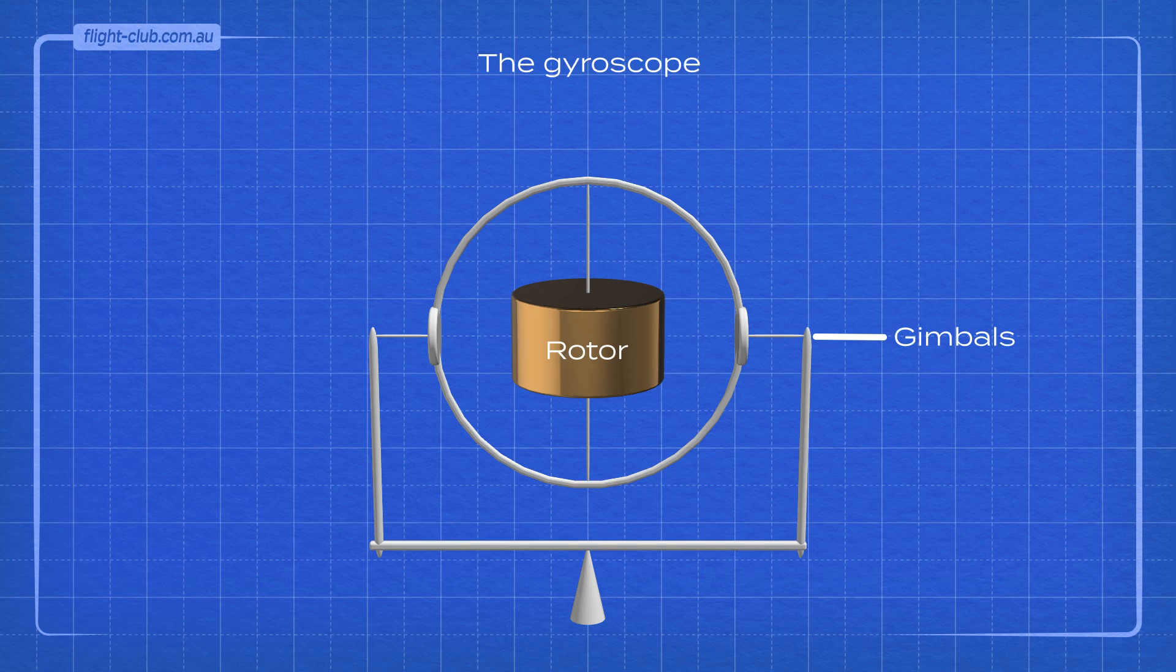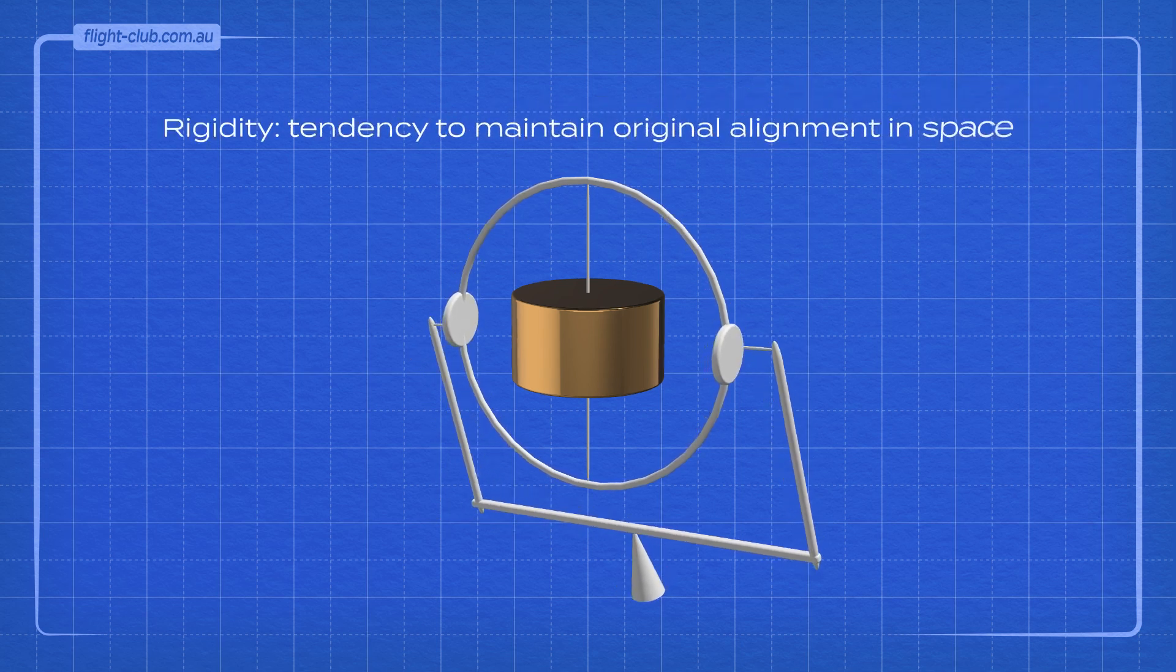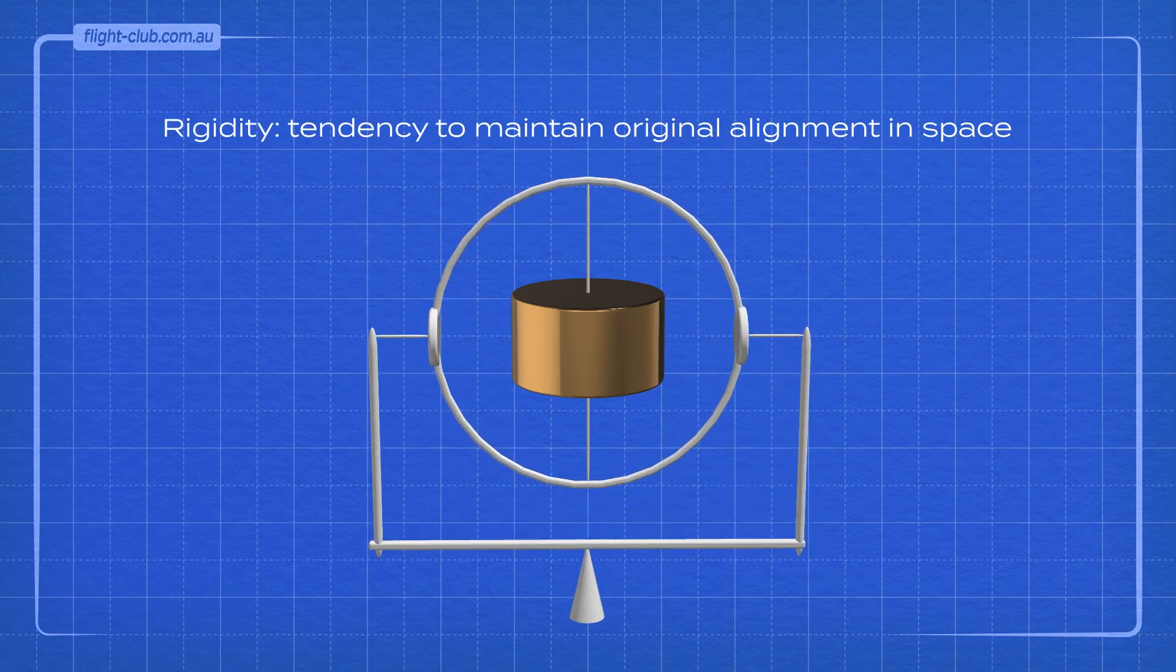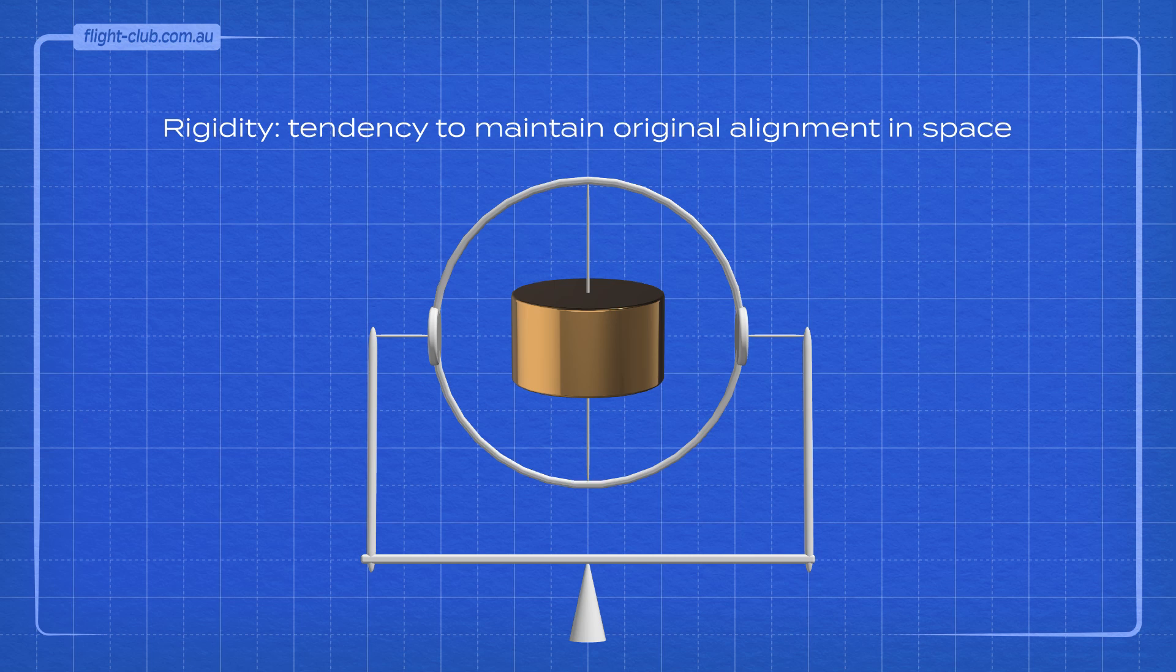A characteristic of a rotating mass like this is its tendency to maintain its original alignment in space, no matter what happens around it.